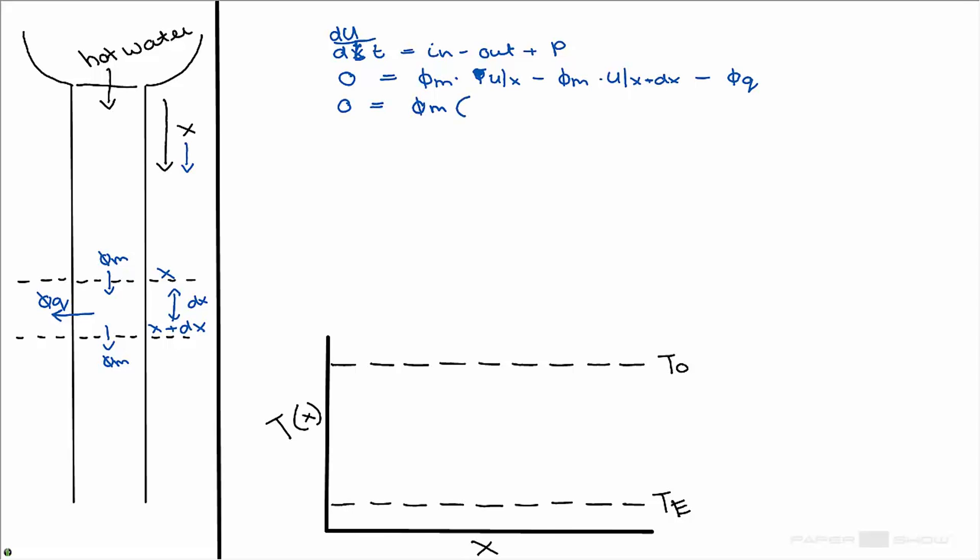Now I can rewrite this. I may use Newton's law of cooling which is h times a times the difference in temperature. I can use pi times the diameter times dx for the area since it is a pipe.